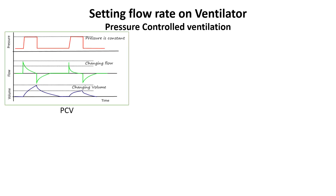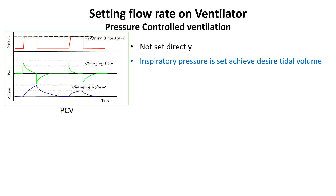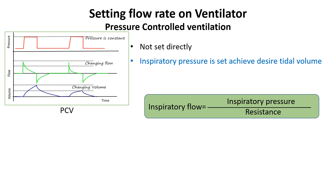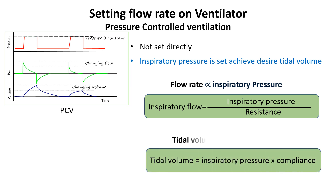In pressure-controlled ventilation, flow is not set directly. Instead, inspiratory pressure is used to achieve the desired tidal volume. Increasing the inspiratory pressure increases the pressure gradient between the ventilator and the lungs, leading to higher flow. Conversely, lowering inspiratory pressure reduces the pressure gradient, resulting in lower inspiratory flow. Tidal volume also increases but depends on lung compliance.